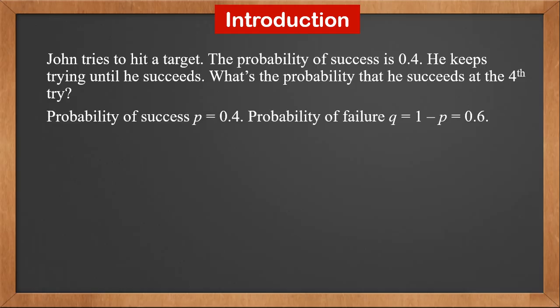We mark the probability of success as p. The probability of failure is q. If p is 0.4, then q is 1 minus p, which is 0.6.